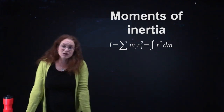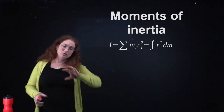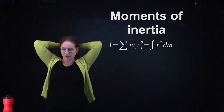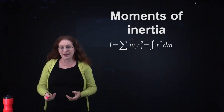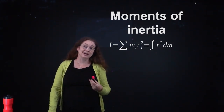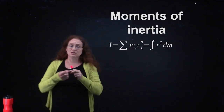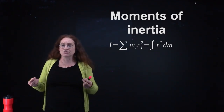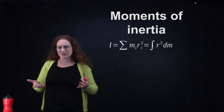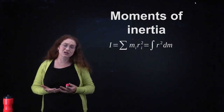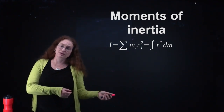Moments of inertia. Last chapter we introduced the concept of a center of mass, which lets you treat an object as a point particle located at one point. When we have rotational motion, we have a moment of inertia, which is a way of measuring where the mass is distributed around the circle. Something with a larger moment of inertia is harder to get rotating, just like something with a larger mass is harder to accelerate.